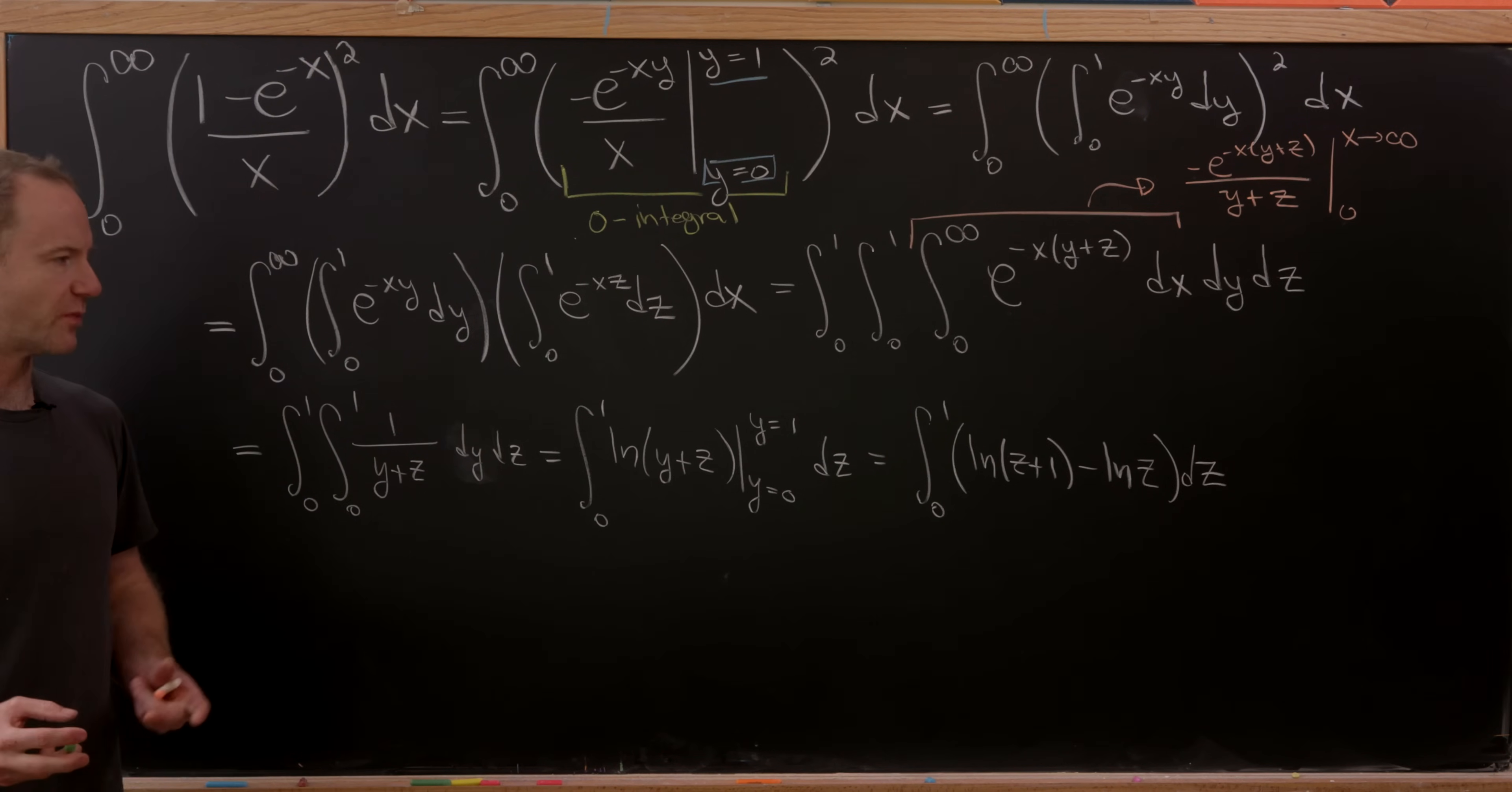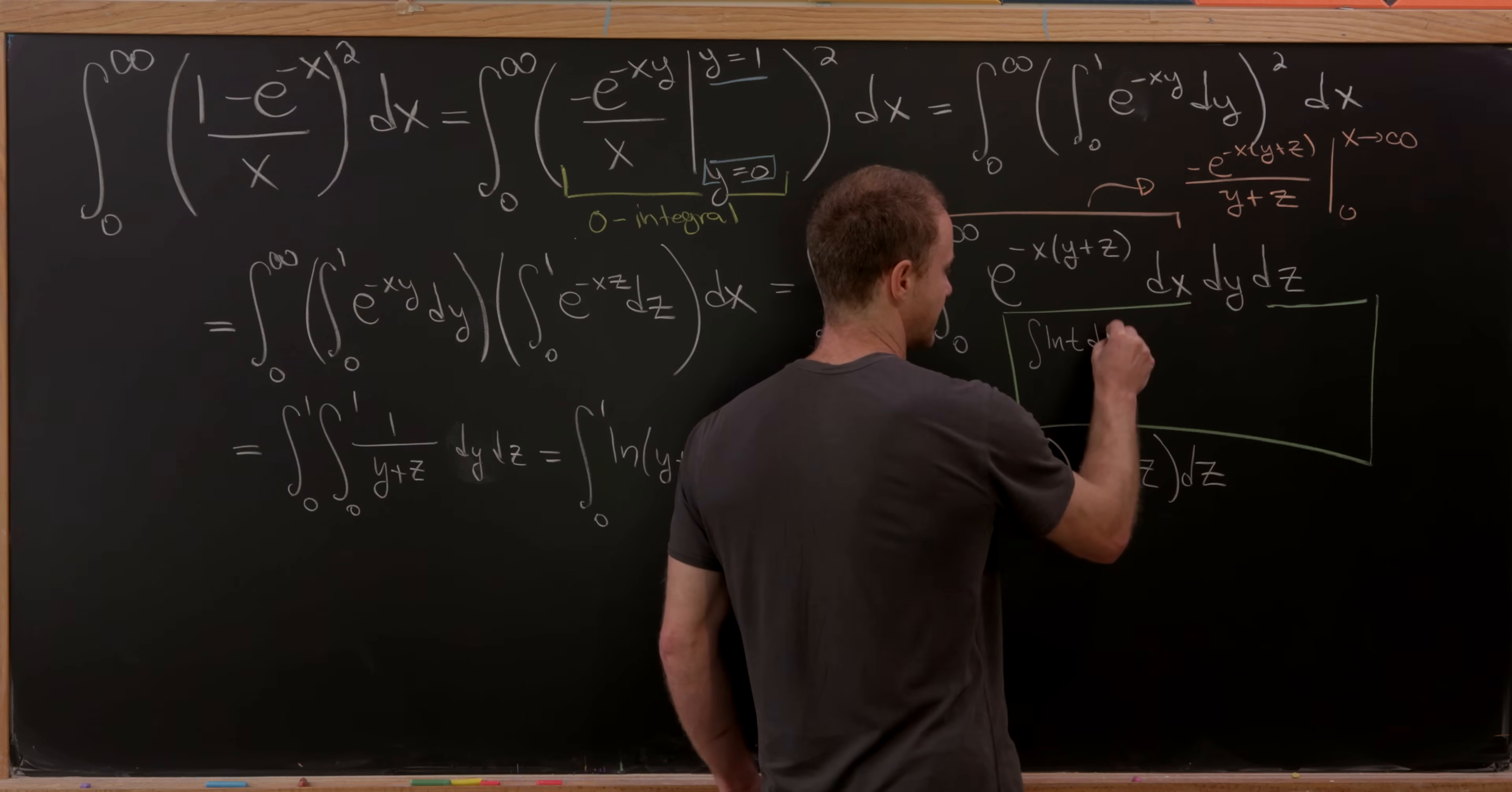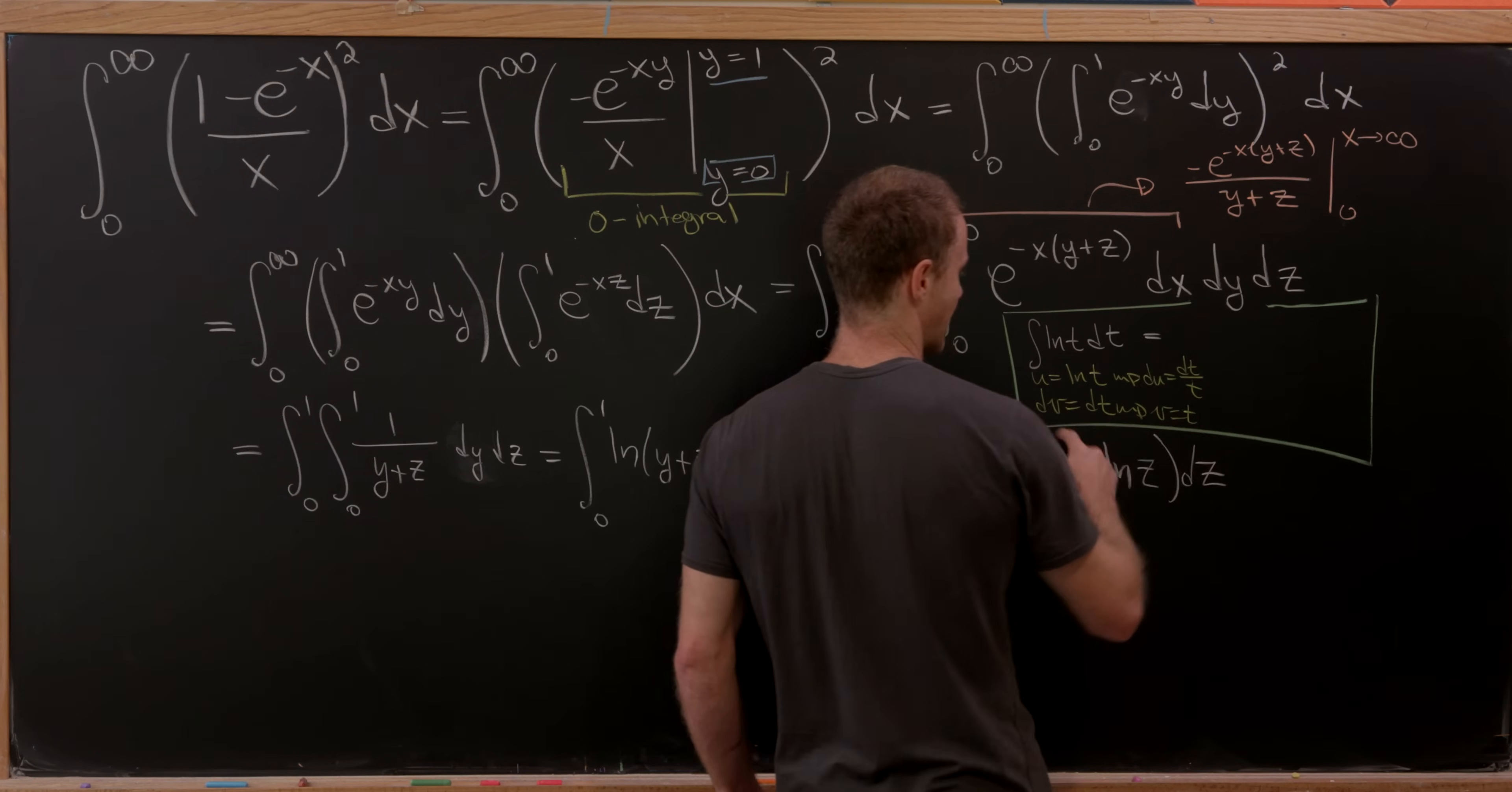But now in order to evaluate both parts of that, we need to recall the anti-derivative of the natural log function, which is a bit tricky, but we can gain that anti-derivative by using integration by parts. So let's do it kind of in general right here. If we were to take the anti-derivative of the natural log of t, the trick is to set u equal to the natural log of t, and then dv is equal to dt. So this means du is dt/t, and this means that v is equal to t.